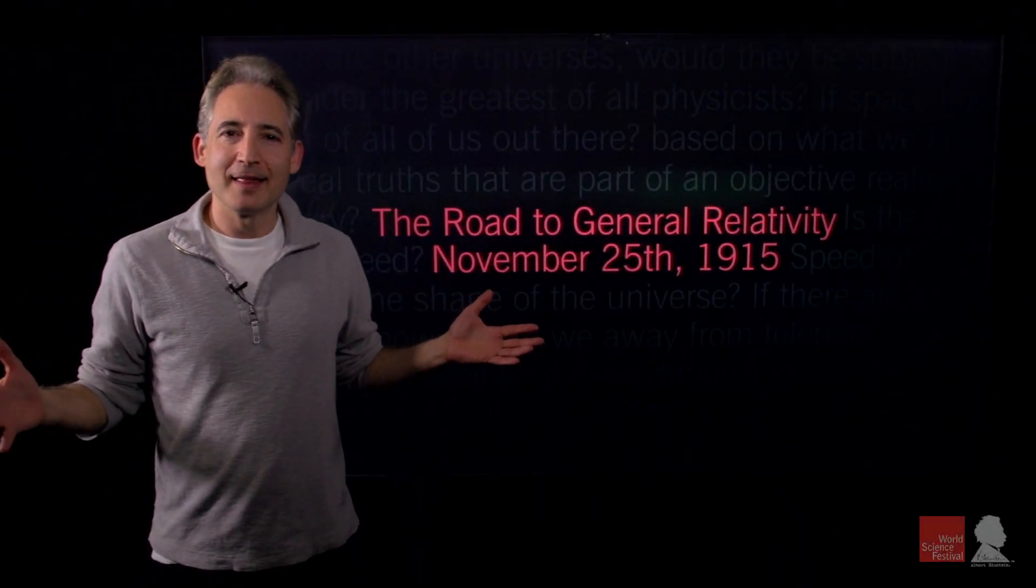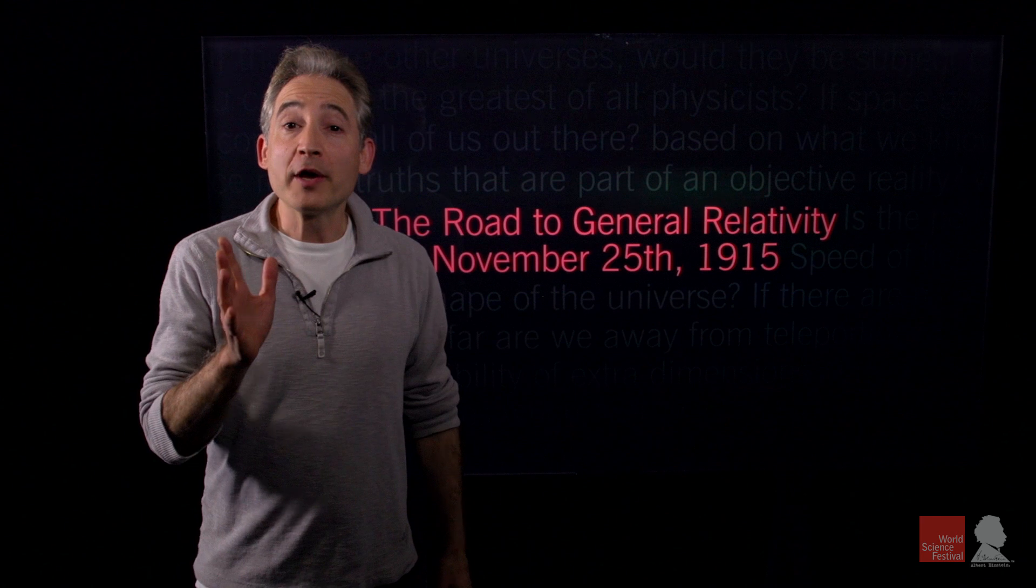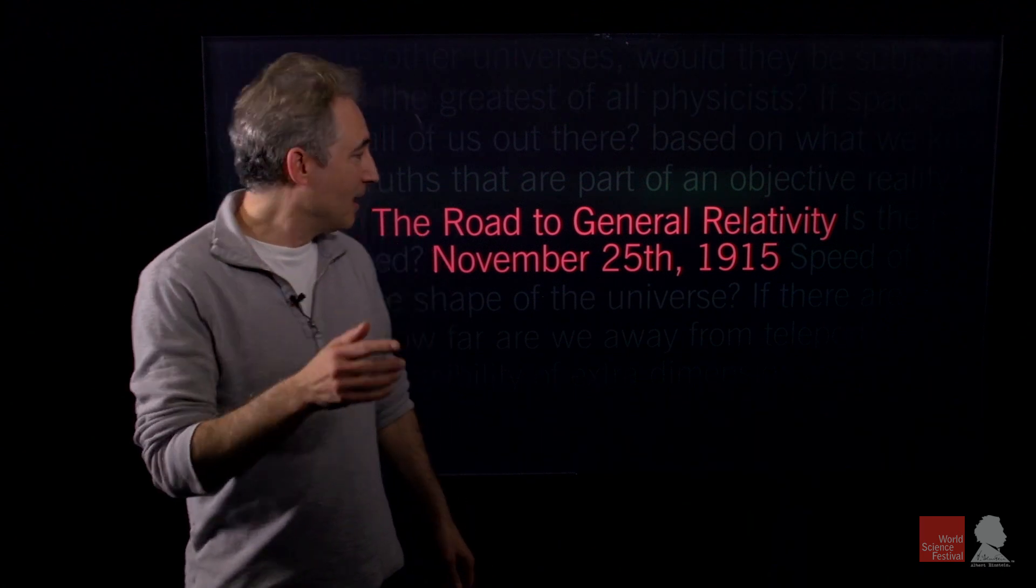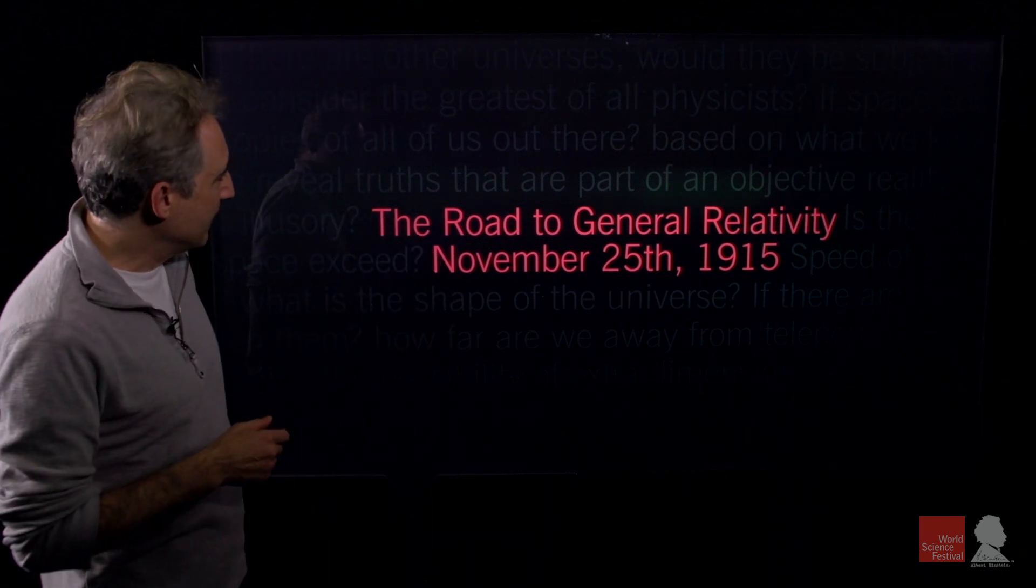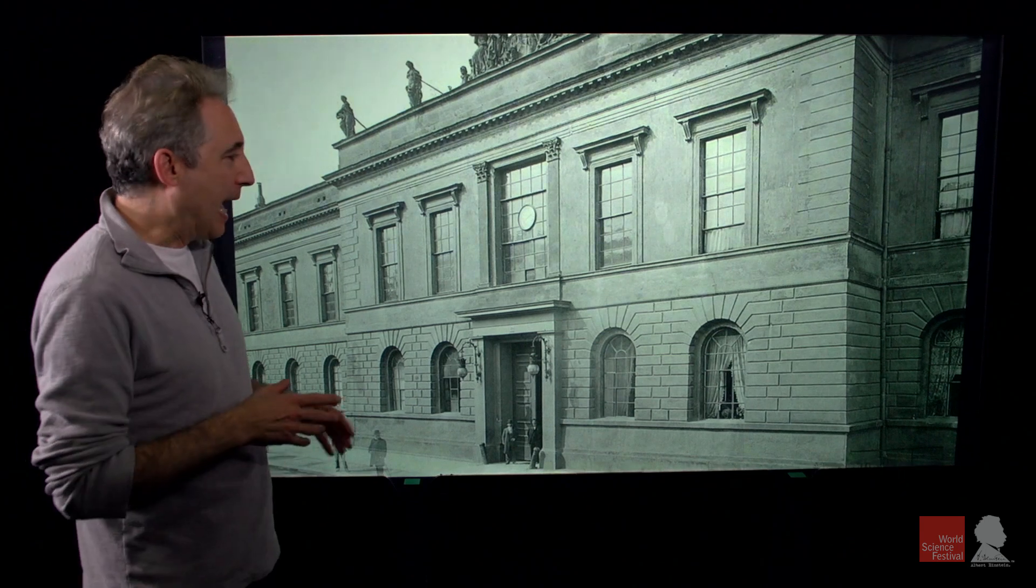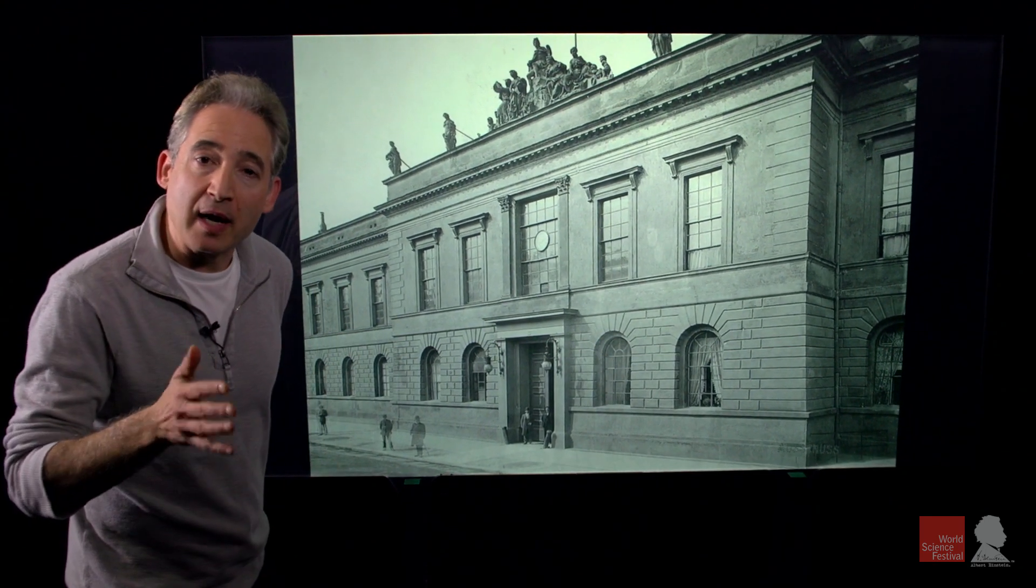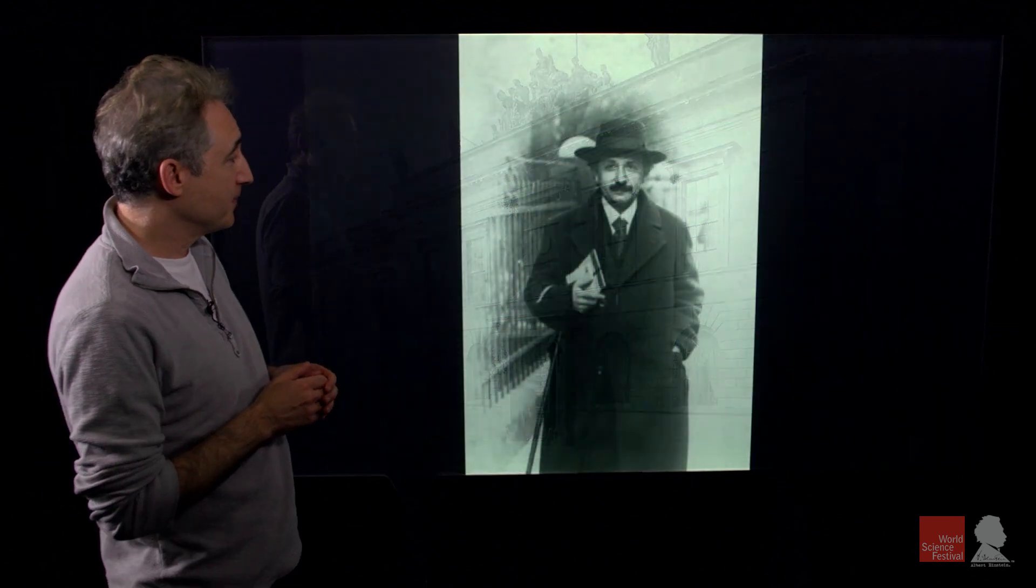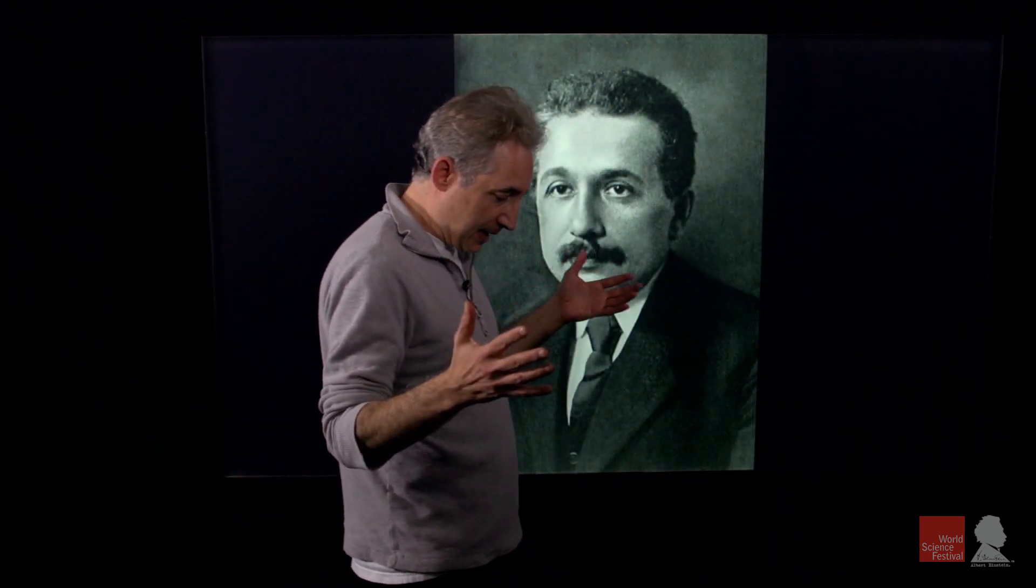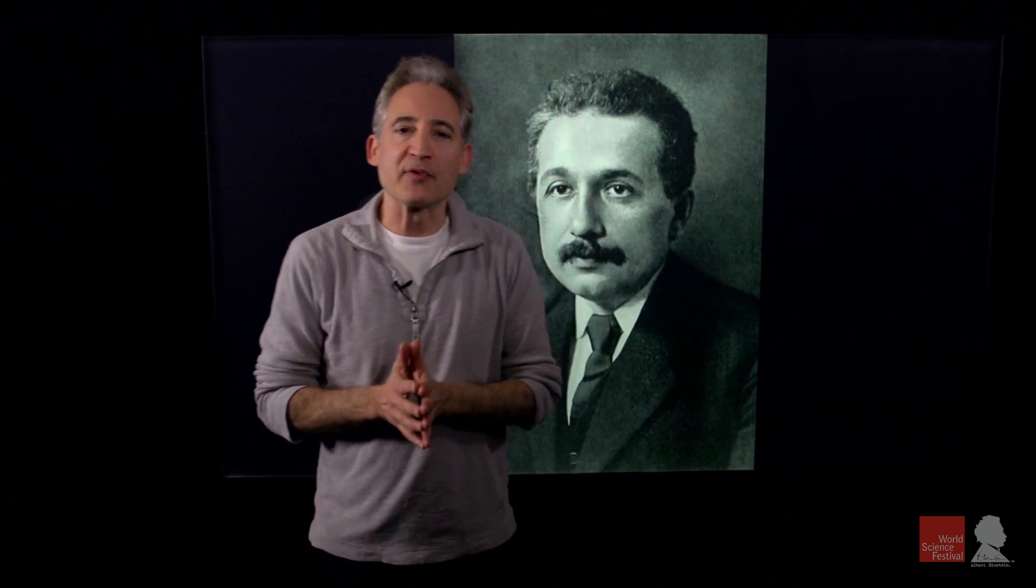Today is the big day. 100 years ago today, on November 25th, 1915, Albert Einstein lectures at the Prussian Academy for the fourth time in four weeks. And this time he's able to stand proudly in front of the assembled crowd and announce to them and to the world that he had finally completed the equations of the general theory of relativity.